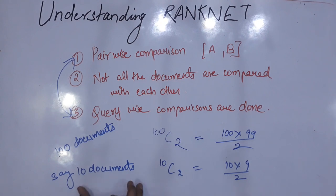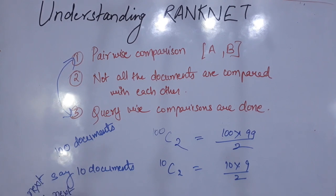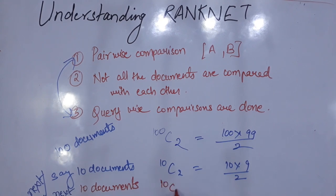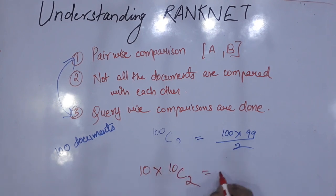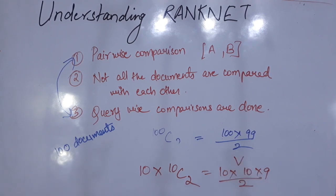For these 10 documents we have these many comparisons, and for the next query we get the next 10 documents — again 10C2. So in total, for 100 documents, we run the query 10 times: 10 × 10C2 = 10 × 10 × 9 / 2, which is less than ranking all 100 documents together.